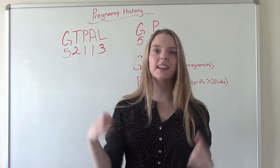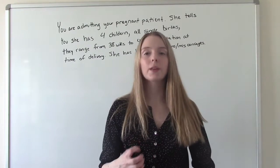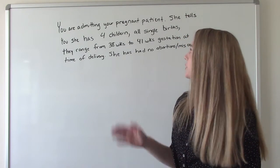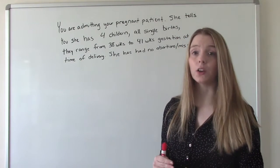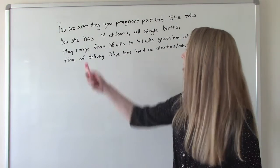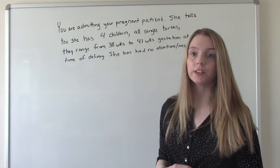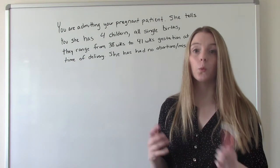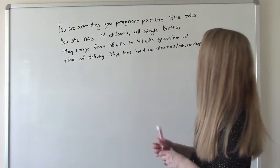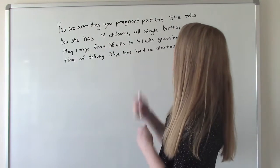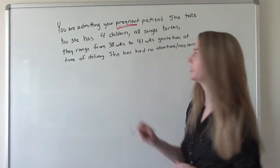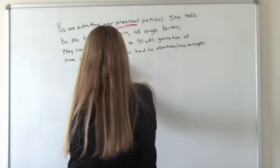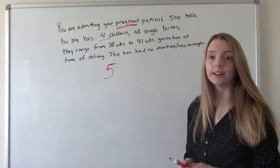All right, so now that we know how to do it, let's actually do a couple practice ones. Let's start with kind of an easy one for practice. You're admitting your pregnant patient. She tells you that she has four children. They were all single births, no multiples. They range from 38 weeks to 41 weeks gestation when they were delivered, and she has had no abortions or miscarriages. So what is her GTPAL? So she has four kids, and she's currently pregnant. Don't forget this part. So she is a five.